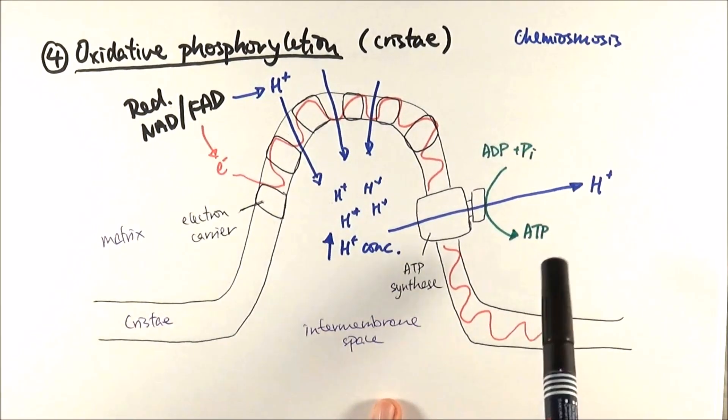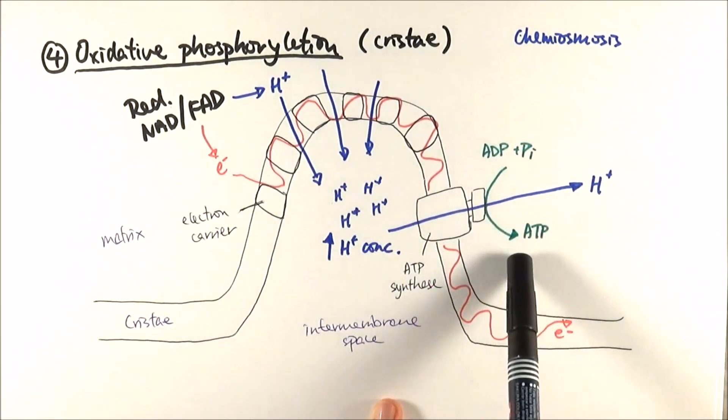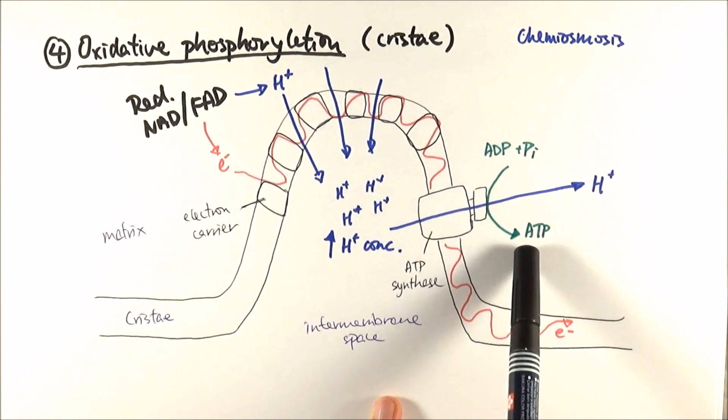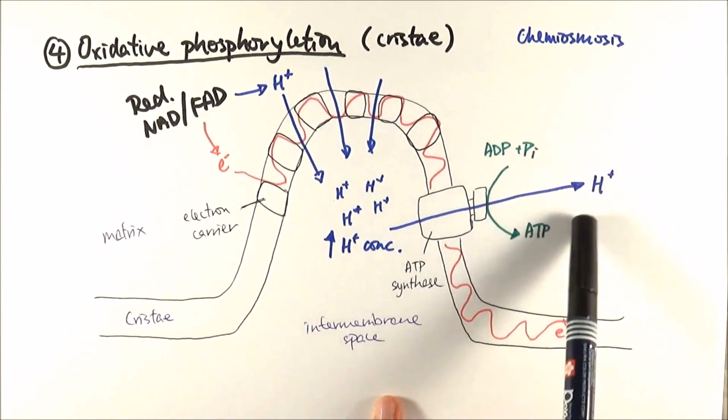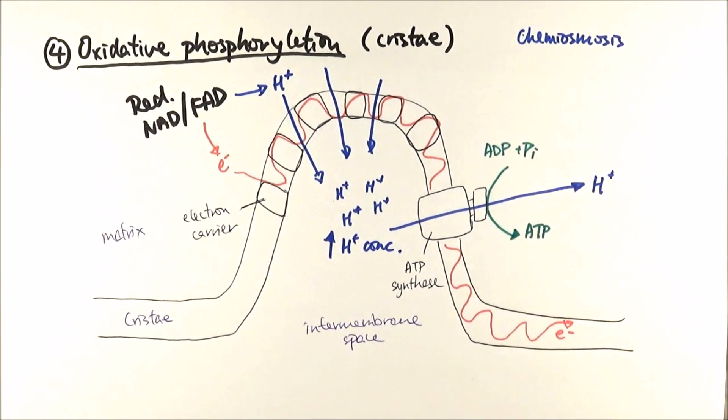In the final stage, we already generated our ATP, which is our key goal of respiration, but we've got protons and electrons left. Now, we can't allow them to randomly stay in the cristae or in the mitochondria.